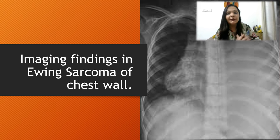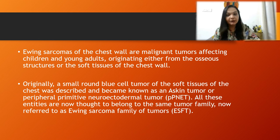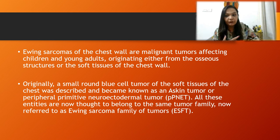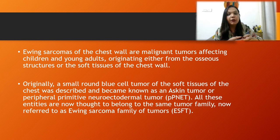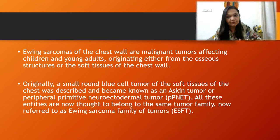Now, imaging findings in Ewing Sarcoma of the chest wall. These are malignant tumours affecting children and young adults, from 10 to 25 years of age, originating either from the osseous structures or from the soft tissue of the chest wall. Originally, a small round blue cell tumour of the soft tissues of the chest was described and came to be known as the Askin tumour or peripheral primitive neuroectodermal tumour. All these entities are now thought to belong to the same tumour family, referred to as the Ewing Sarcoma family of tumours.